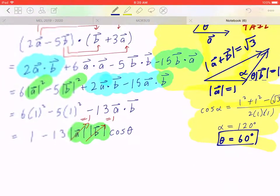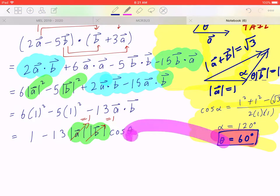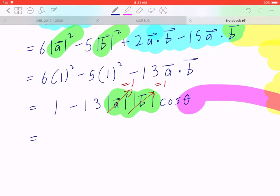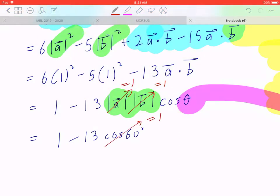Okay. So now, we can plug this back in and work it out. So theta is going to be 60. Here comes the second last step. So, 1 minus 13 times cosine of 60 degrees. Cosine of 60 equals a half.